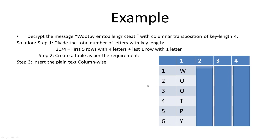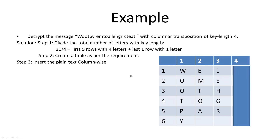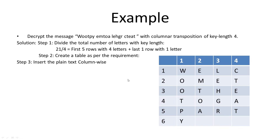Step three for decryption: insert the text column-wise. The first column gets W O O T P Y — because the first five rows have four letters but the last row has one letter, so we insert a letter even in the last row. The second column gets E M T O A — we don't insert into the sixth row's remaining cells, so three cells of the last row will be empty. The third column gets L E H G R, and the final column gets C T E A T.